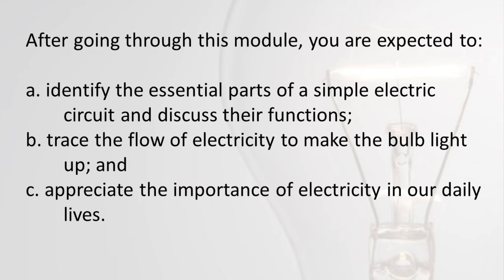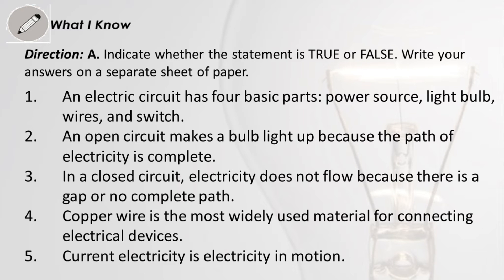Direction A: Indicate whether the statement is true or false. Write your answers on a separate sheet of paper. (1) An electric circuit has four basic parts: power source, light bulb, wires, and switch. (2) An open circuit makes a bulb light up because the path of electricity is complete. (3) In a closed circuit, electricity does not flow because there is a gap or no complete path. (4) Copper wire is the most widely used material for connecting electrical devices. (5) Current electricity is electricity in motion.